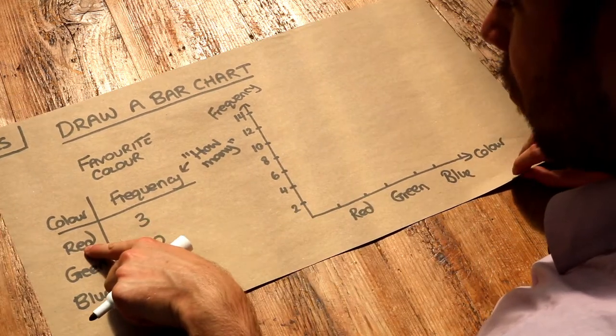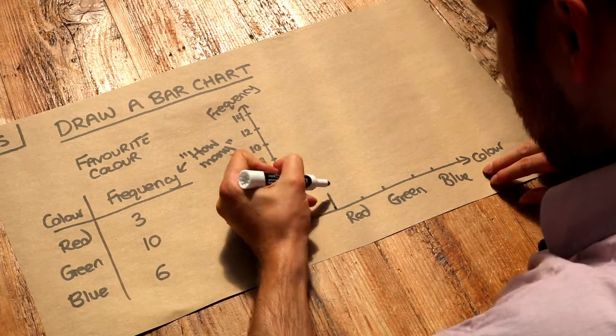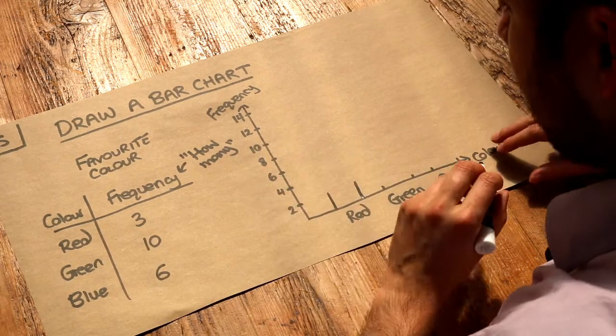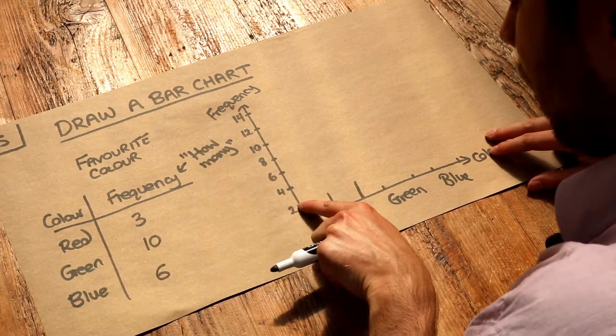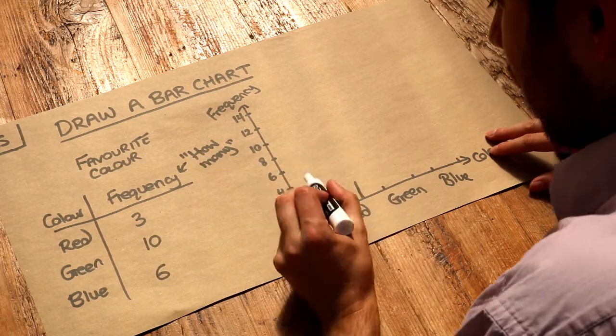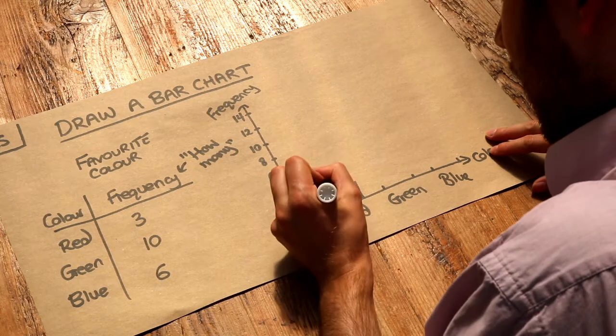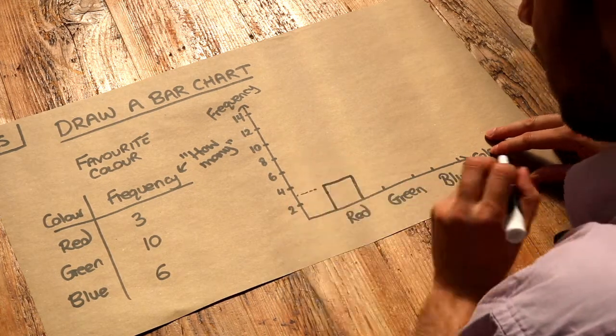We've got three people who liked red, so our bar here, which is just a rectangle, should go up to three on the frequency axis. So three is halfway between two and four, like here, and that's where the top of our bar is going to go.